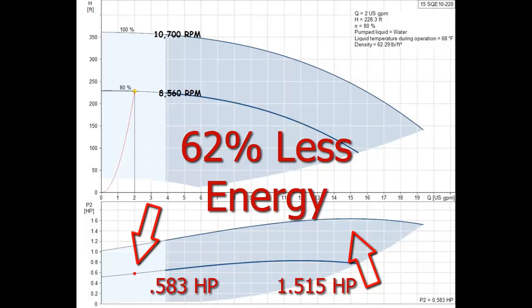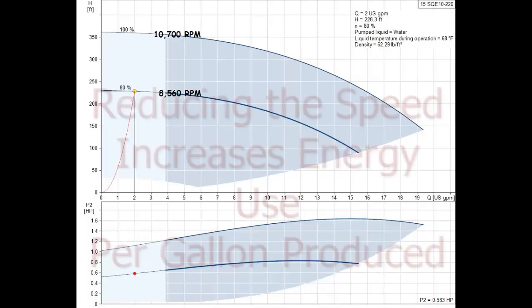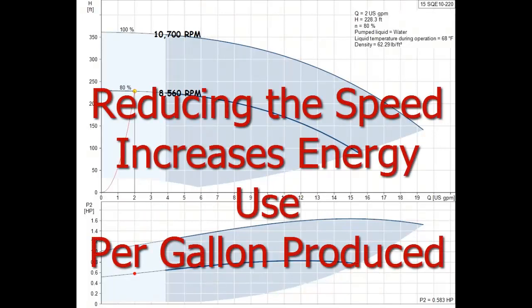But wait a minute, not so fast. Decreasing the speed only reduces the horsepower needed to spin the pump and motor. Varying the speed actually increases the energy consumption per gallon produced.